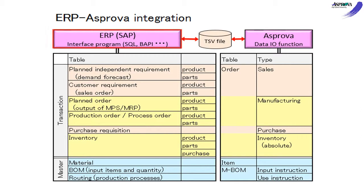It is necessary to prepare the interface program for the ERP side. The typical interface program for SAP is the BAPI interface. In Asprova, data import and export is implemented by the DBIO feature. Thus, in most cases, there is no need to develop the software.